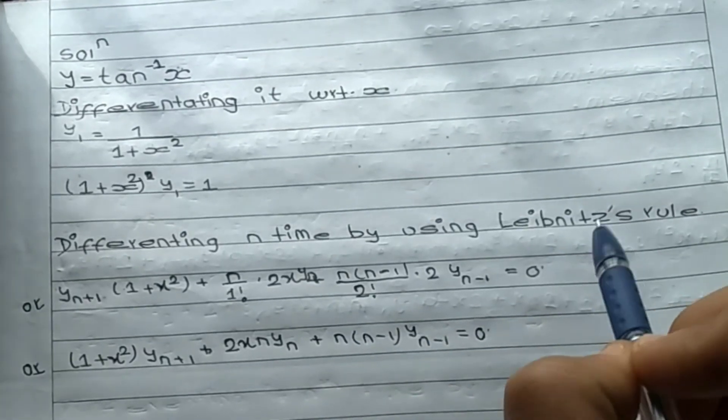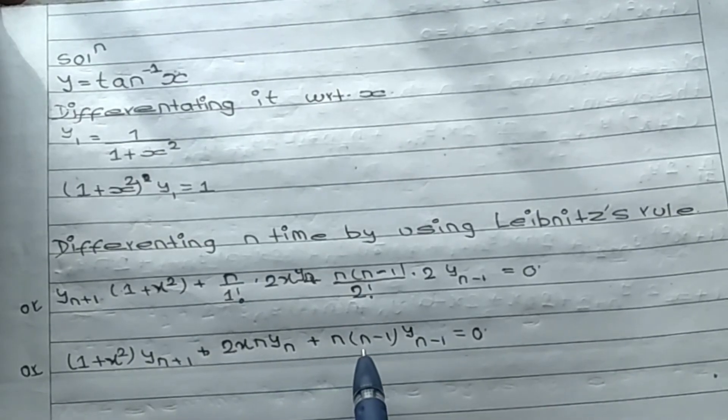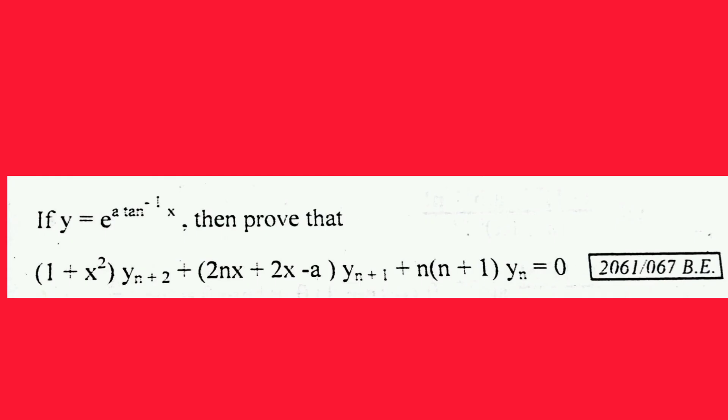Solve that. 1 plus x squared. 2x·n·y_n plus n(n minus 1).